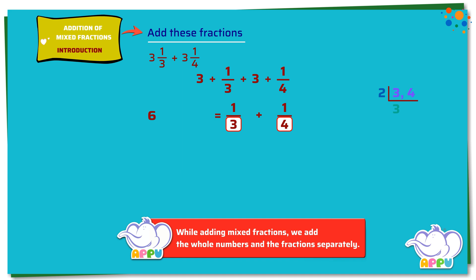2 is divisible by 2. We repeat the steps again with 2. 3 is not divisible by 2, so we write 3 as it is. 2 is divisible by 2. We get 1.